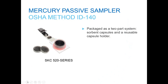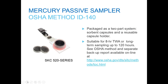The SKC mercury passive sampler is packaged as a two-part system: single-use sorbent capsules and reusable capsule holders. The method is suitable not only for eight-hour time-weighted average sampling but for extended sampling up to 120 hours. All of this validation is written up in the method as well as a separate backup report on the OSHA website.